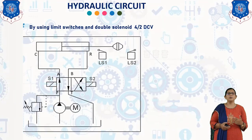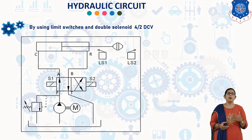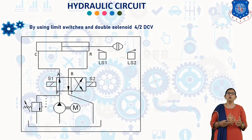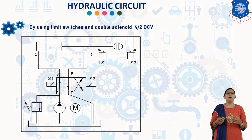Now we will discuss the hydraulic circuit using a limit switch and double solenoid valve for a 4/2 direct control valve. What is a 4/2 DCV? It means a 4-way, 2-position direction control valve. A 4/2 DCV has 4 connections and 2 valve positions. Normally, one port is open to flow from the pump.